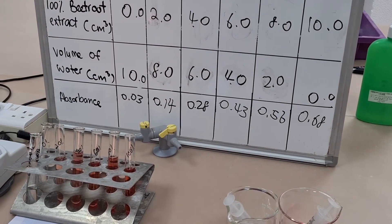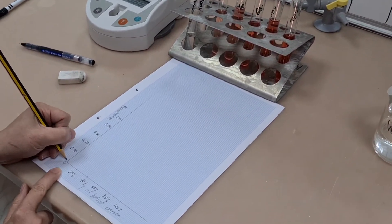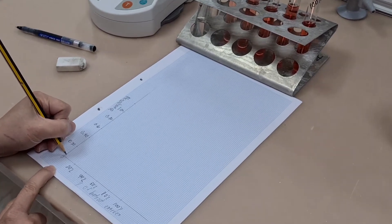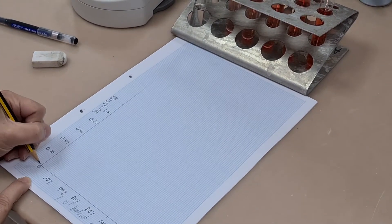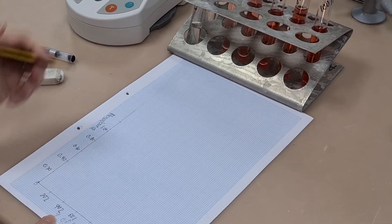And up the side, we've got absorbance. Now there's a couple of errors with this graph. There's an error on the x-axis and there's an error at the point where the x-axis meets the y-axis.